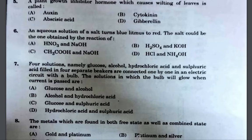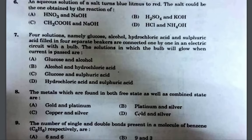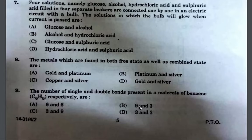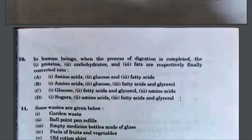The correct answer here is hydrochloric acid and sulfuric acid. Next, copper and silver both occur in free state and combined state. Next, in the benzene molecule there are nine single bonds, three double bonds, and two pi bonds.